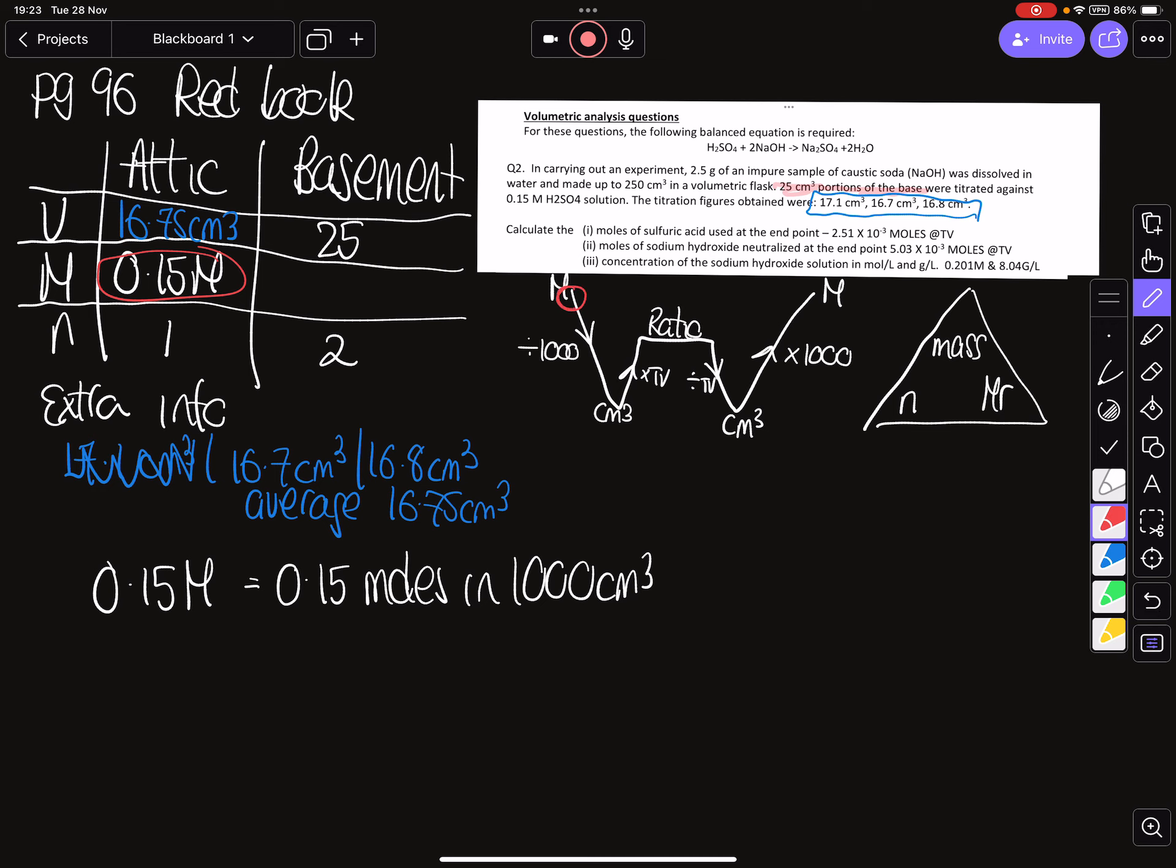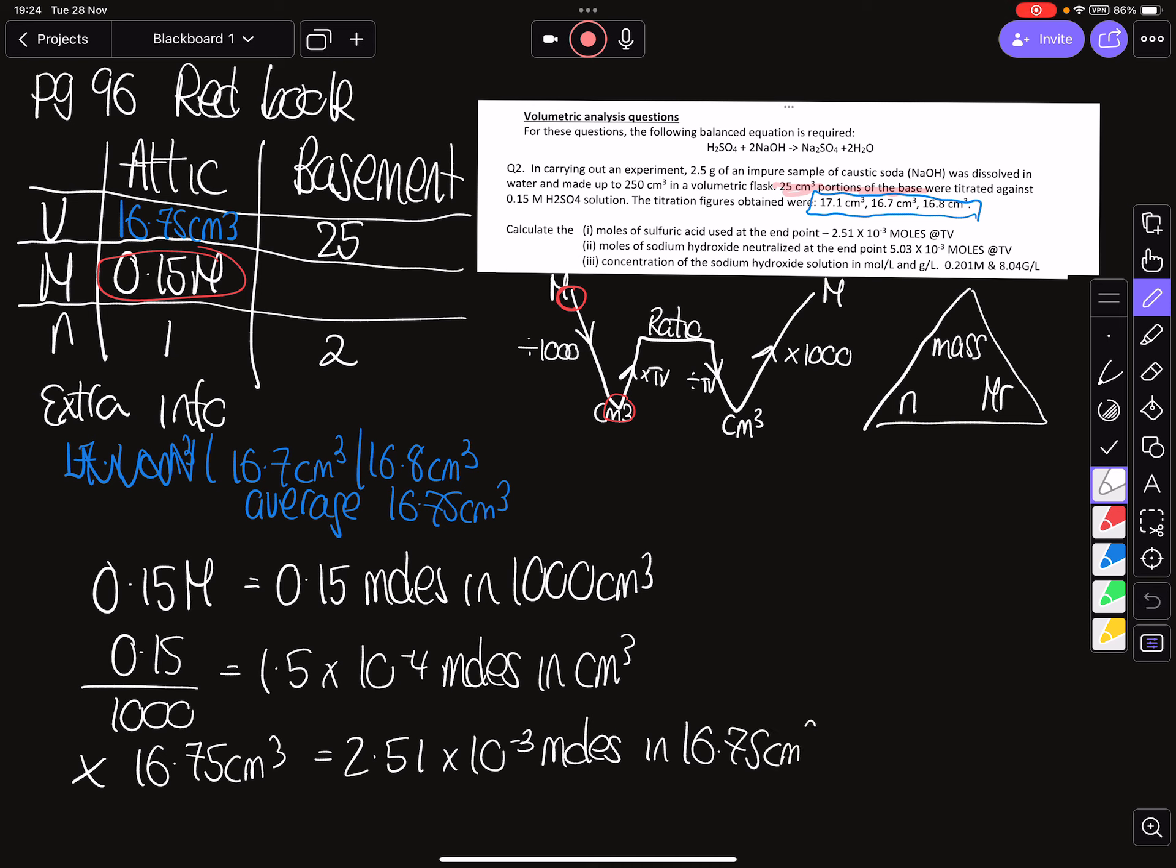Okay, so at this point, we are up here on our little W, we're going to divide by 1000. So 0.15 divided by 1000 is going to give me 1.5 by 10 to the minus 4 moles in a centimeter cubed. And again, however your calculator gives you as an answer, we go with that. So now we are at that point on our triangle. We're now going to go up by multiplying by our tighter volume. So in that case, it's going to be 16.75 centimeters cubed. So once we do that, we are getting 2.51 by 10 to the minus 3 moles.